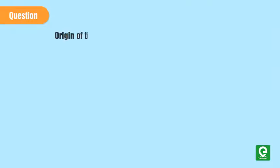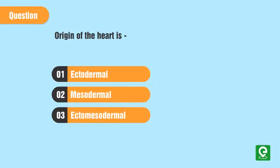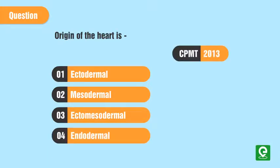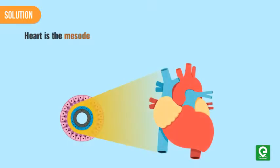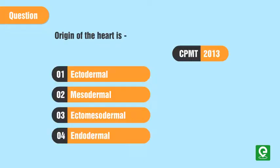Question from CPMT 2013: The origin of the heart is — 1. Ectodermal, 2. Mesodermal, 3. Ecto-mesodermal, 4. Endodermal. Solution: The heart is a mesodermally derived organ situated in the thoracic cavity, in between the two lungs, slightly tilted to the left. Hence, option 2 is the correct answer.